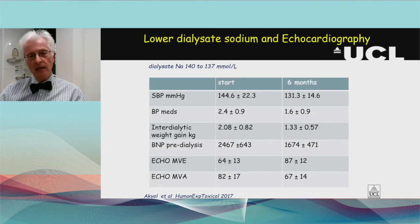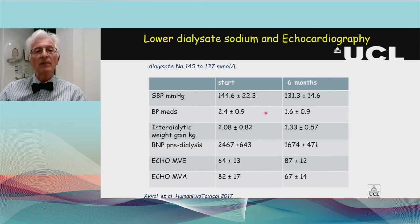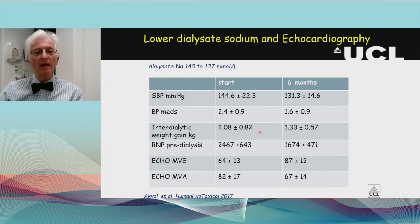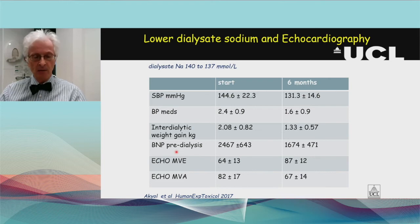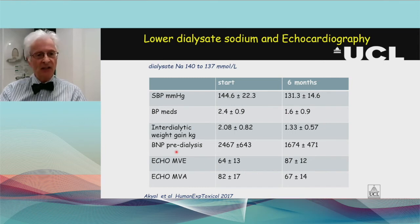A different study reducing dialysate sodium from 140 to 137 also showed systolic blood pressure fell, the number of blood pressure tablets dropped during a six-month study, and weight gains fell. Brain natriuretic peptide concentrations dropped, and echocardiographic findings showed a beneficial effect in reducing diastolic dysfunction — reducing stiffness of the heart — by moving to a lower dialysate sodium.